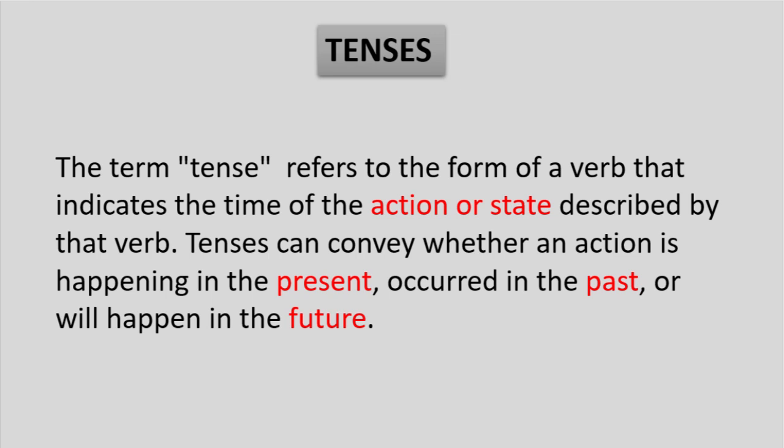What does tense mean? The term tense refers to the form of a verb that indicates the time of the action or state described by that verb. Tenses can convey whether an action is happening in the present, occurred in the past, or will happen in the future.